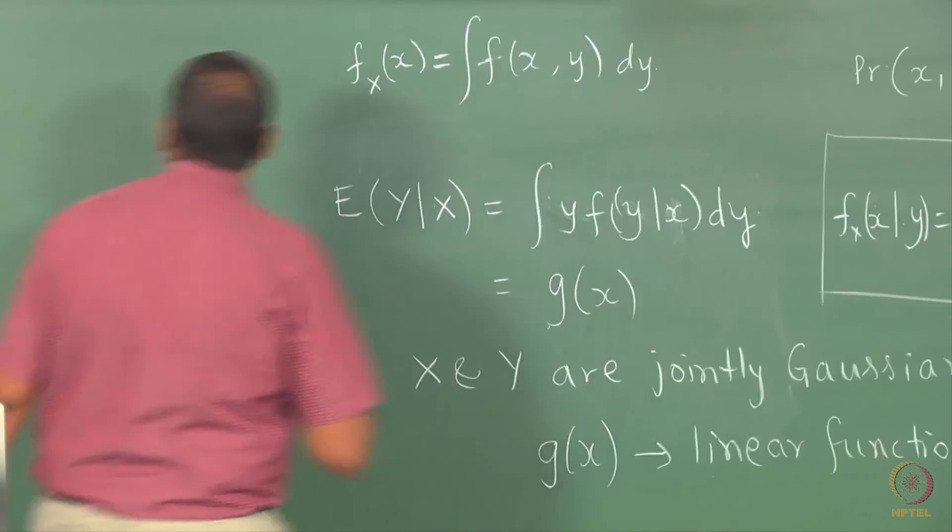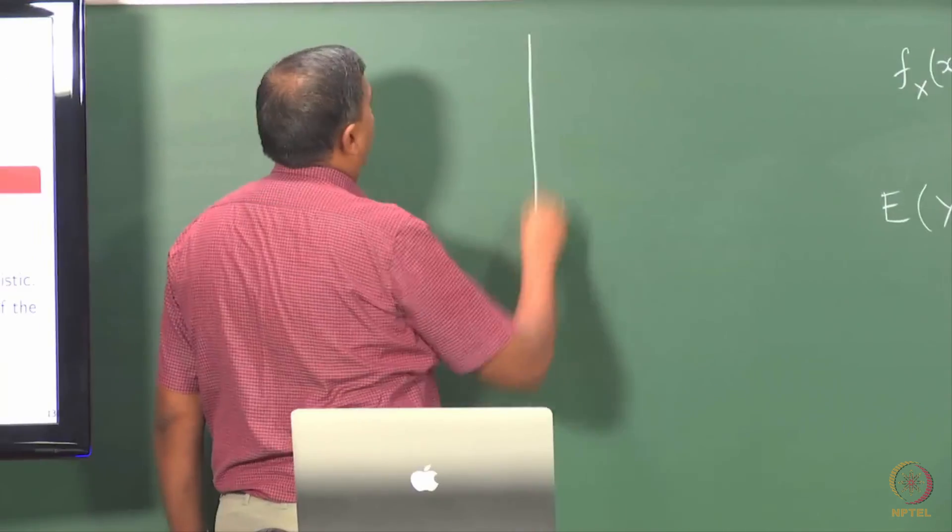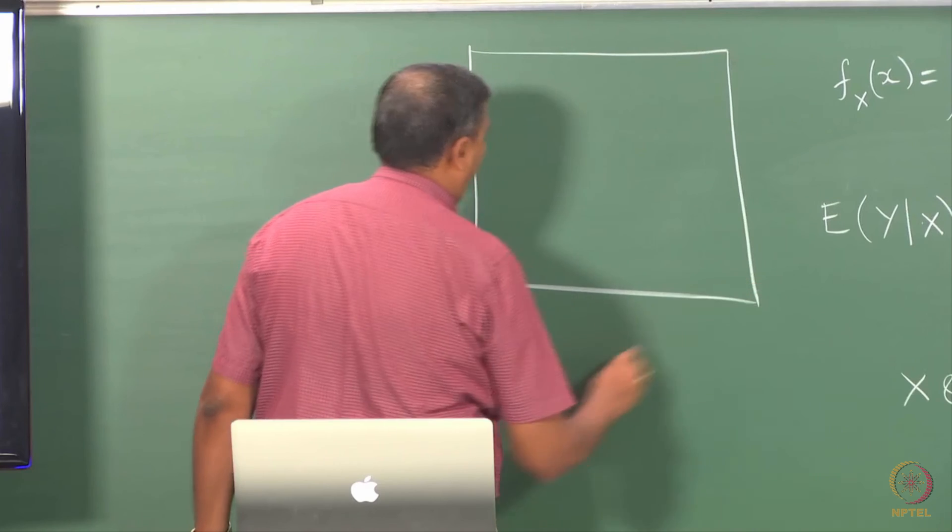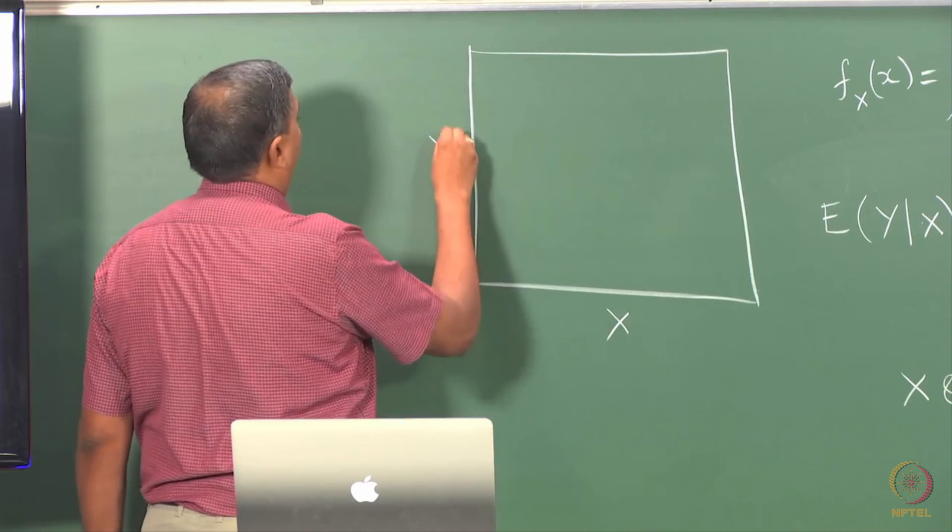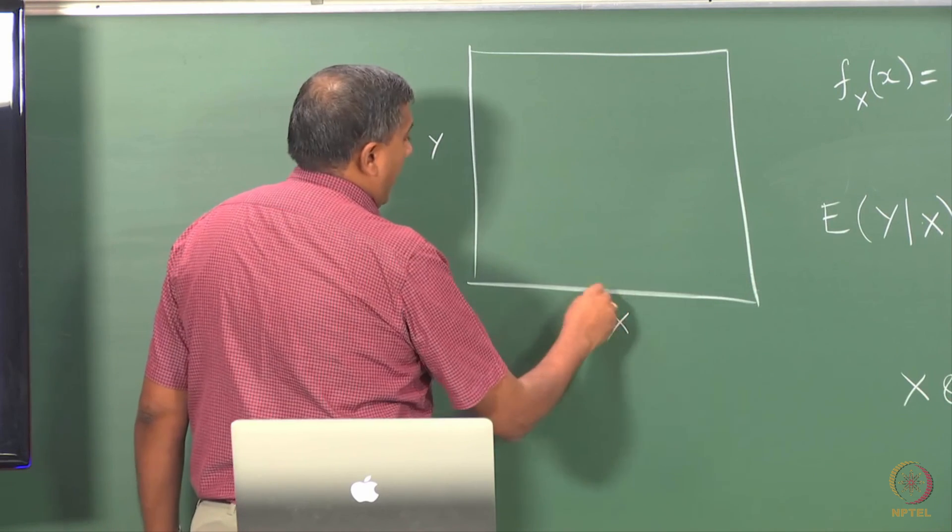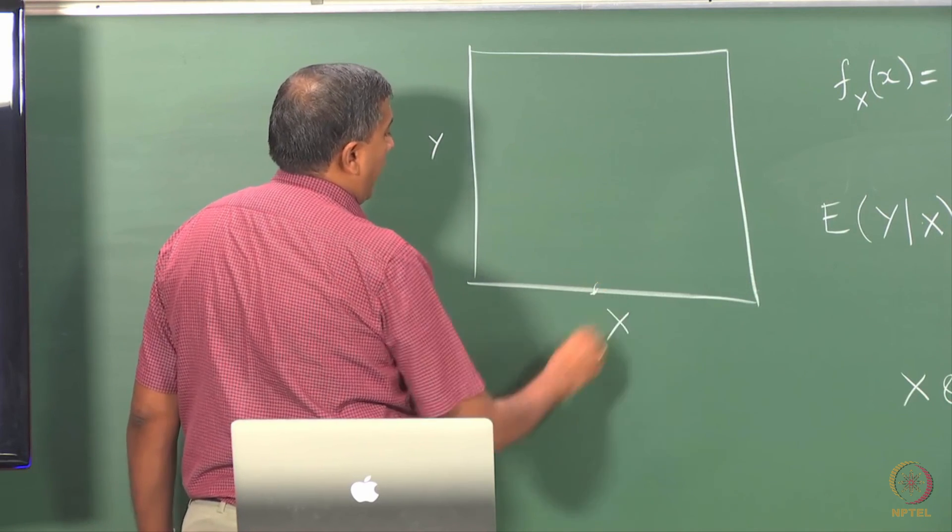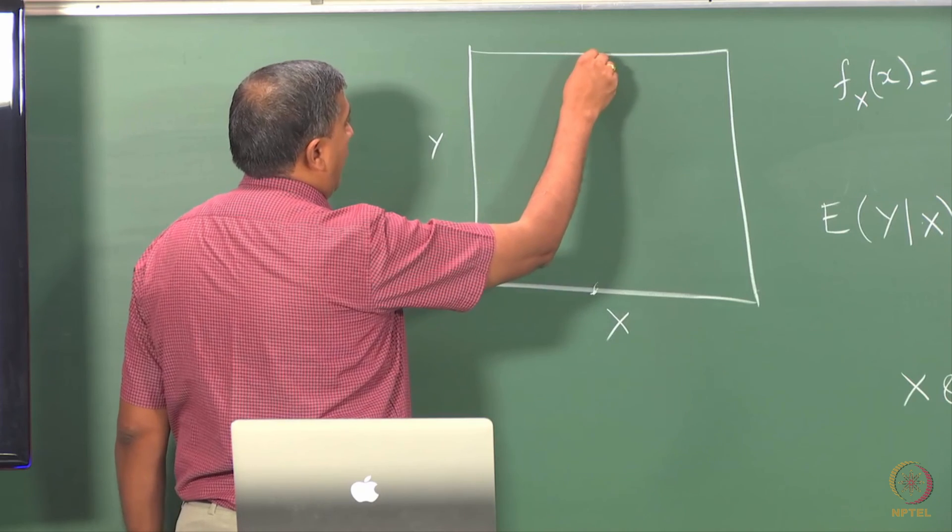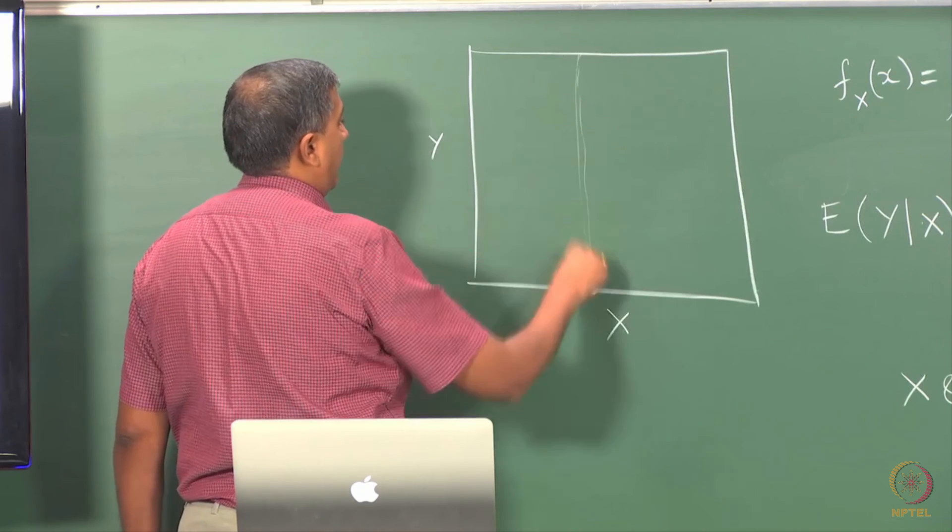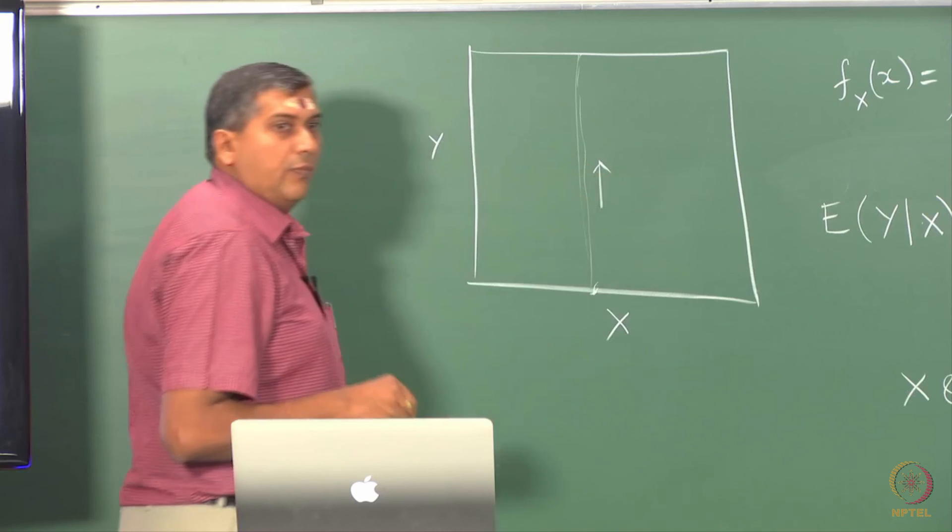If you go back to this 2 dimensional plane that we have here, x and y, let's say for the purpose of illustration we have anchored x here and we are evaluating the expectation along this direction here.